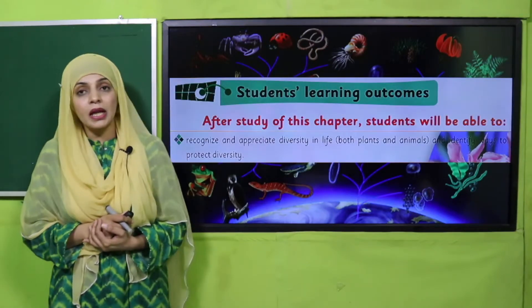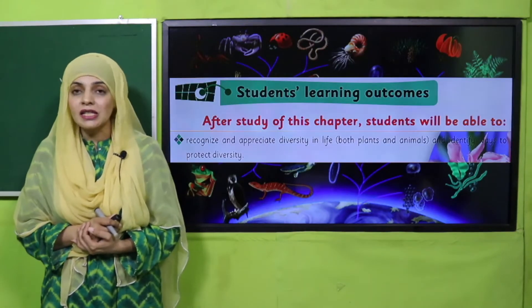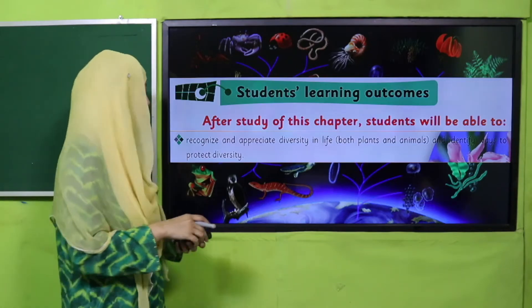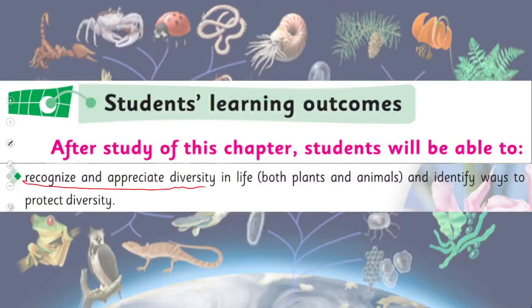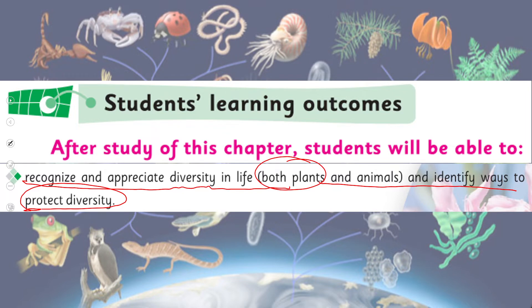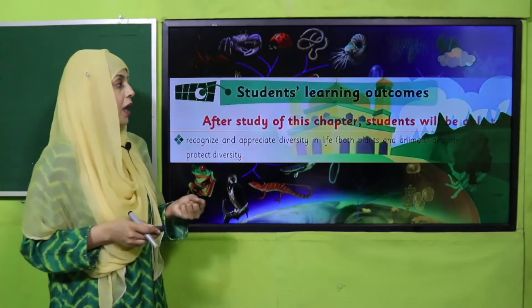Now let's move forward to today's student learning outcomes. By the end of today's lecture, all students will be able to recognize and appreciate diversity in life — both plants and animals — and identify ways to protect diversity. Plants are different from animals, plants are different from other plants, and animals are different from other animals. This is called diversity, and we will study about that today.